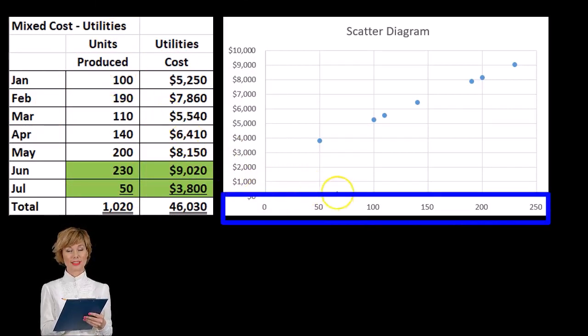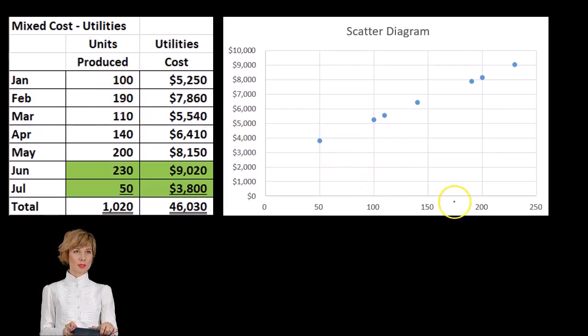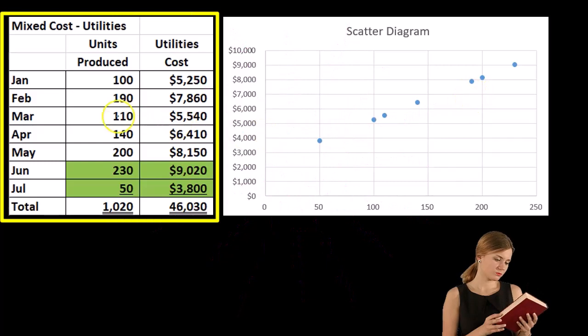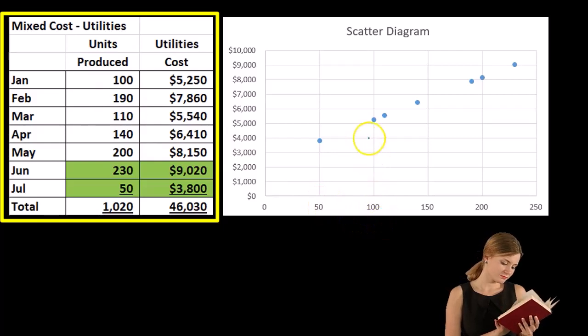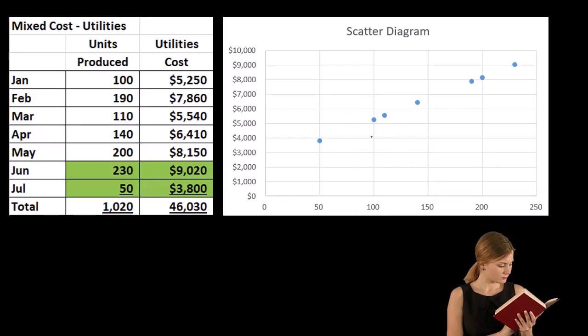And of course, you could see at 100, we have 100, and that's at 5,250. And then, again, it doesn't go quite in order in terms of the units of production. It's at 190 here, somewhere up here, and then we've got 7,860, and then it goes to 110. But you can see that as we go up in terms of units, we have an increase typically in the dollar amount as well, although the slope is not exactly the same.